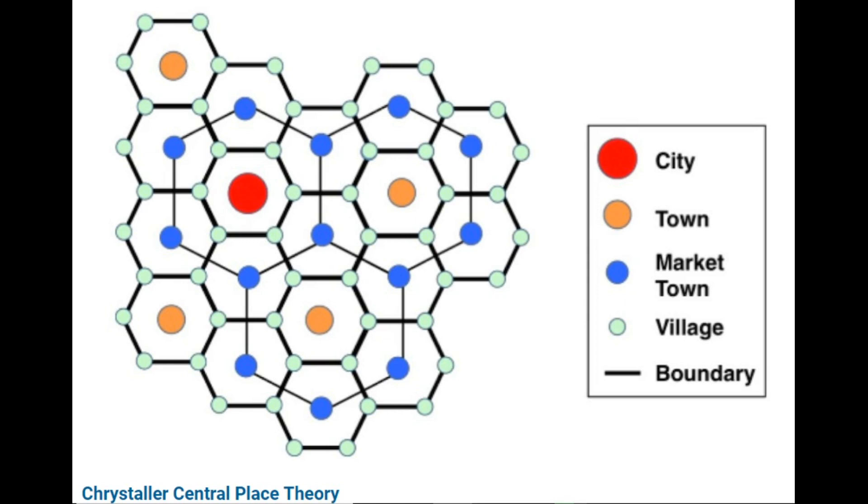According to the transportation principle, K equals 4. The market area of a higher-order place includes half of the market area of each of the six neighboring lower-order places, as they are located on the edges of hexagons around the higher-order settlements. This generates a hierarchy of central places which results in the most efficient transport network. These are maximum central places possible located on the main transport routes connecting to the higher-order settlements.